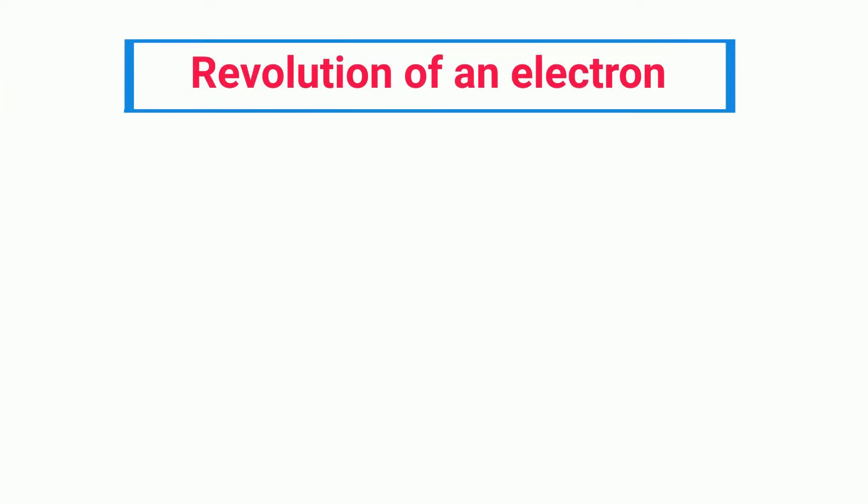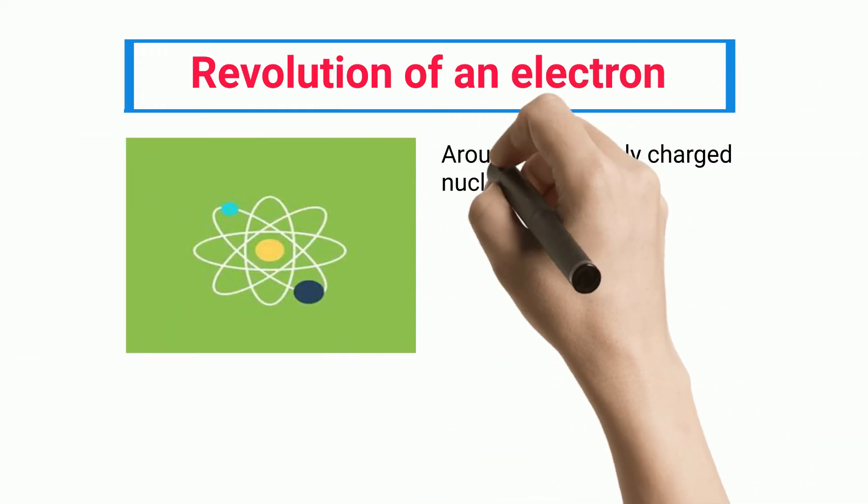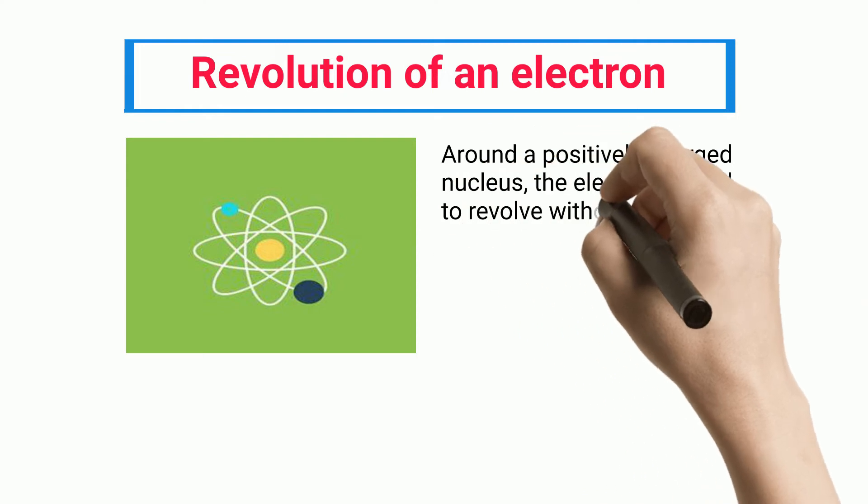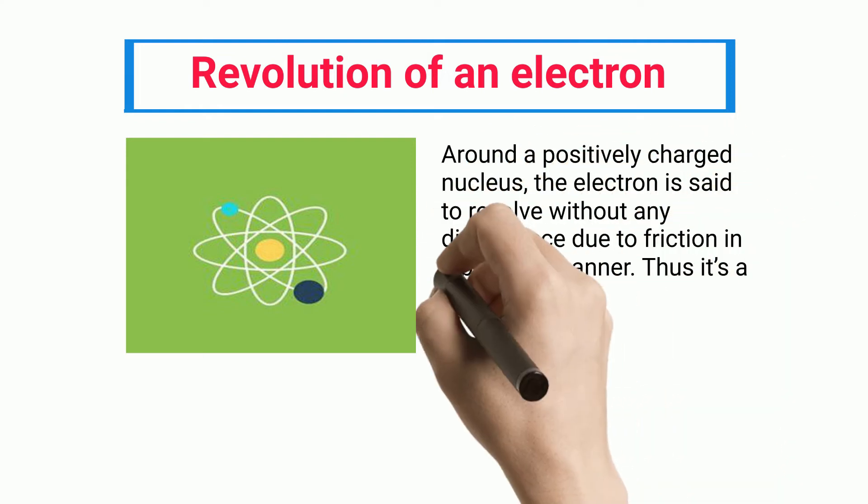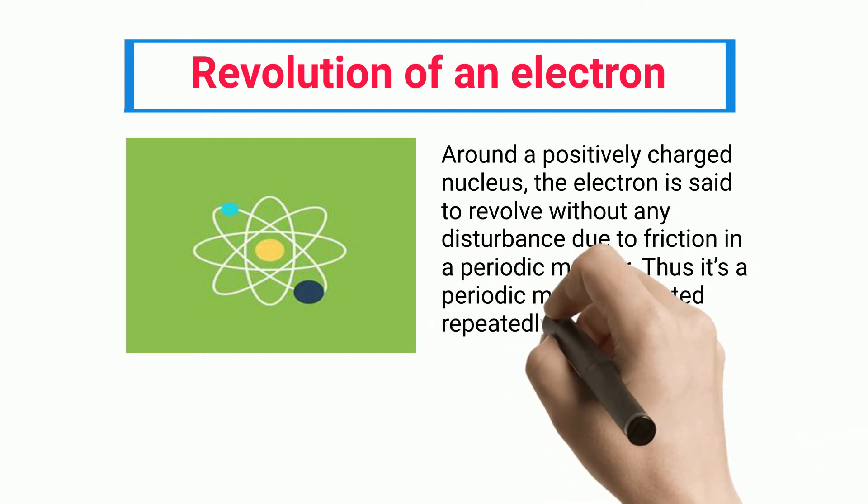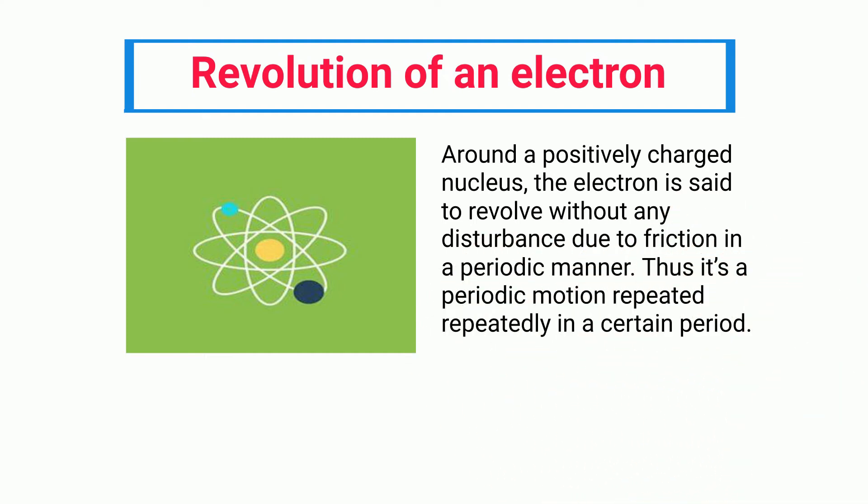Revolution of an electron around a positively charged nucleus: The electron is said to revolve without any disturbance due to friction in a periodic manner. Thus it is a periodic motion repeated in a certain period.